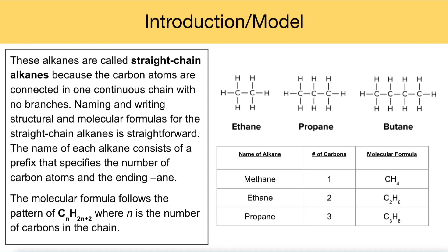These alkanes are specifically called straight chain alkanes because the carbon atoms are connected in one continuous chain with no branches. So all the carbon atoms are in one line.